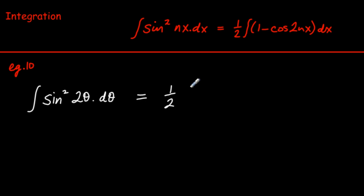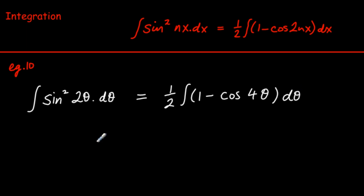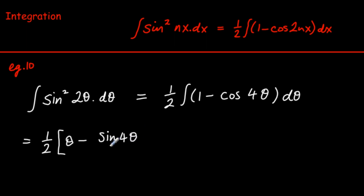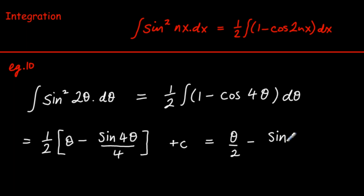Example 10 is very common in the Leaving Cert: the integral of sin²(2θ) dθ. It's useful to know that sin²(nx) can be rewritten as one-half of (1 minus cos 2nx). In this case, with n = 2, we double the angle to get cos 4θ. Integrating: the integral of 1 dθ is θ, and minus cos 4θ gives minus sin 4θ over 4. Adding the constant of integration and dividing through by 2, we get the final answer. This is a very important example.